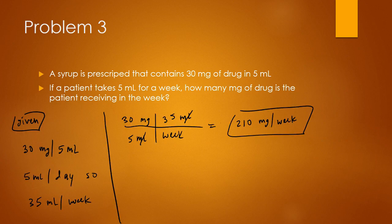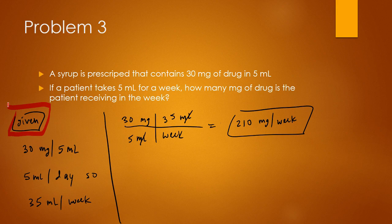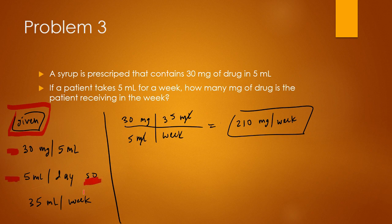Did you get 210 milligrams per week? So on the left here, I have a little summary of what is given. So you know that you have a prescription that contains 30 mg of drug per 5 mls. Then you know that the patient is taking 5 milliliters per day. So if you do the math, 5 times 7 because there are 7 days in a week and you want it in weeks, you'll get 35 mls per week.